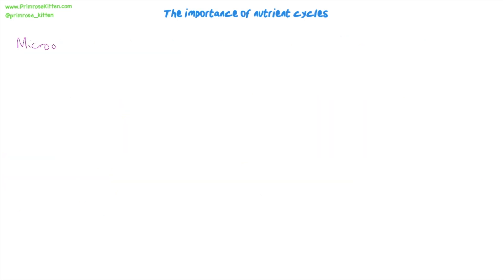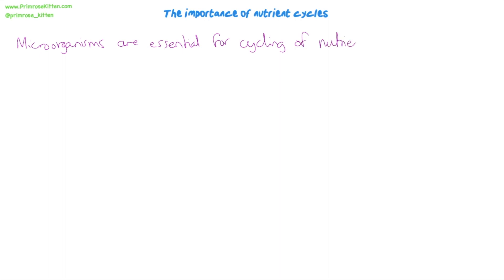Before we go on to the cycles themselves, there's one thing we also have to talk about, which is microorganisms. Microorganisms are essential for the cycling of nutrients — not water, but for the nutrients we're going to look at. So the carbon cycle here as well. If we don't make sure that we're aware of how they work, then we don't necessarily understand those essential parts and steps of those cycles. The specific microorganisms we're talking about here are decomposers.